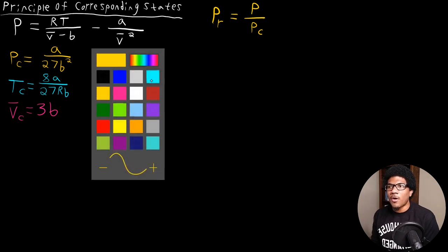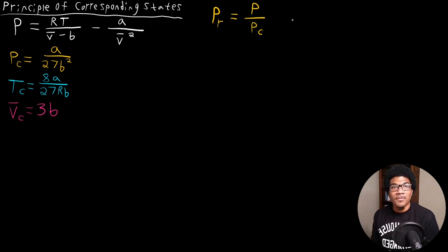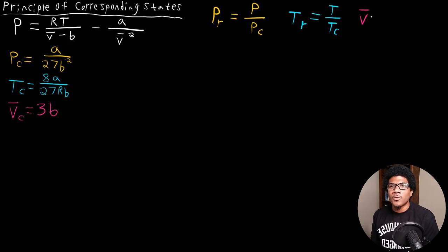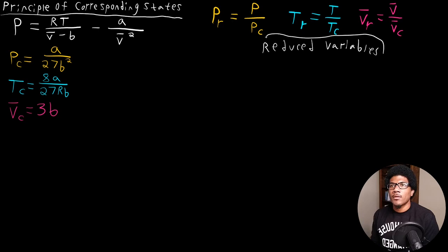We can do this for all of our state variables that define our critical isotherm. For the critical temperature, we can define a reduced temperature where it's a ratio between the current temperature and the critical temperature. And the same thing for the volume, we can define a reduced molar volume as a ratio between the current molar volume and the critical molar volume. These are reduced variables.